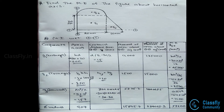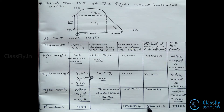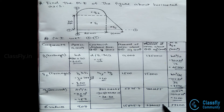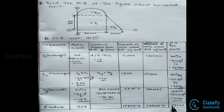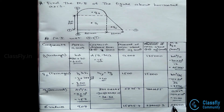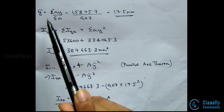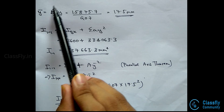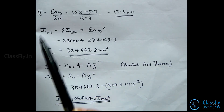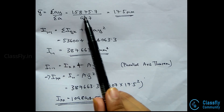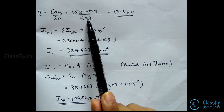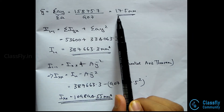Summing up the values: ΣA = 907, ΣAy = 15875.7, ΣAy² = 334063.3, and ΣIgx = 53600. Now y-bar can be found using the formula ΣAy/ΣA, that is 15875.7/907, which gives y-bar = 17.5 mm.